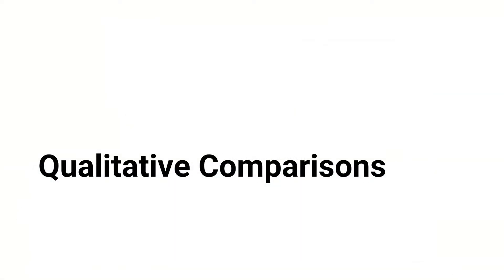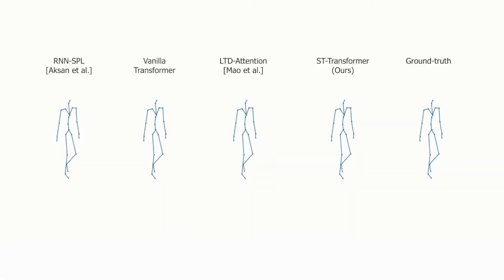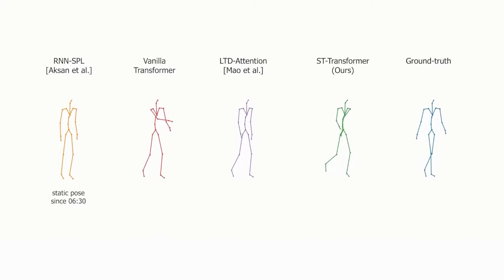We qualitatively compare our model on the AMASS dataset with an RNN-based model, a Vanilla 1D transformer, and the recent state-of-the-art model using discrete cosine transformation representations. Both the predictions of the RNN-SPL and Vanilla transformer quickly slow down and eventually stop moving altogether. The LTD attention model keeps walking for longer, but also comes to a halt eventually.